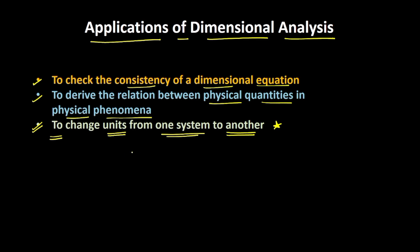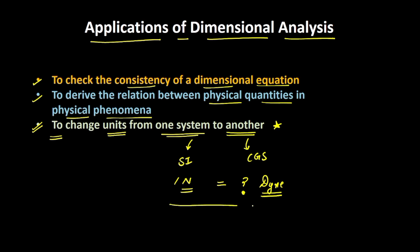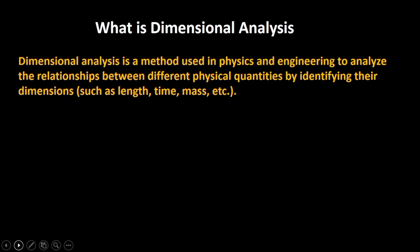For example, you have a particular unit in the SI system and you want to convert it into the CGS system. For example, you have 1 Newton. Newton is the unit of force in the SI system and Dyne is the unit of force in the CGS system. So if we are interested to find how much 1 Newton equals in Dyne, we would be able to use this application. Before we get started, let's throw some light on what dimensional analysis is.